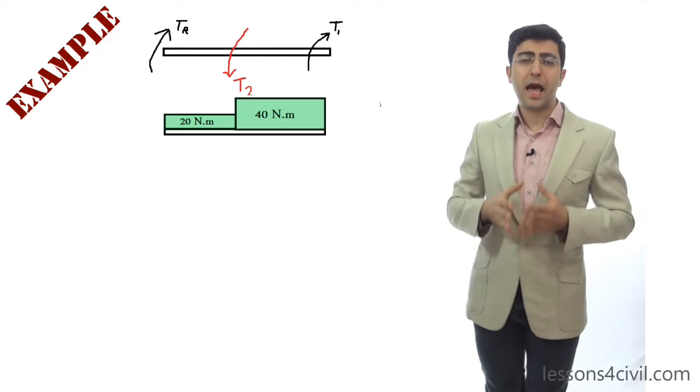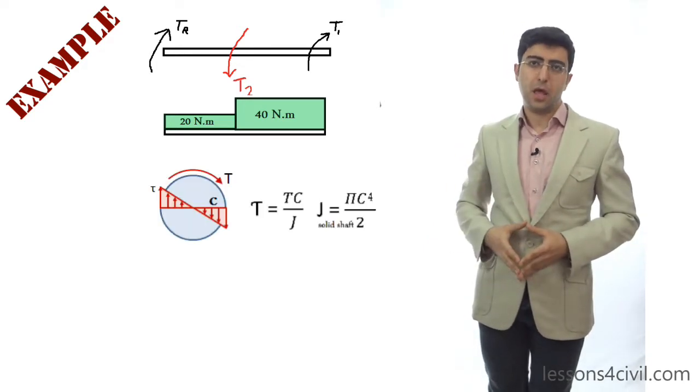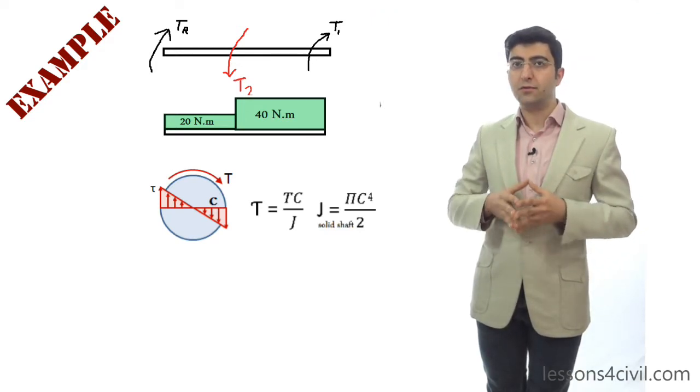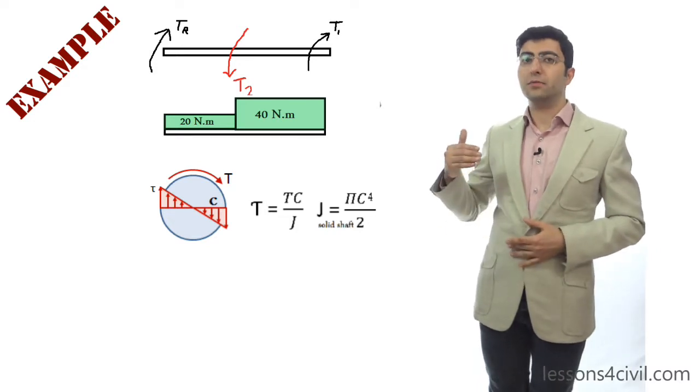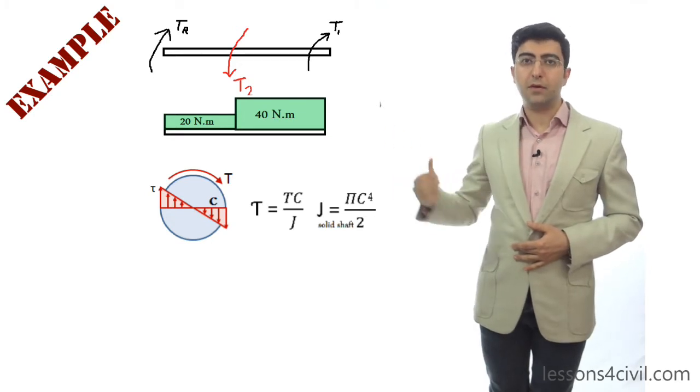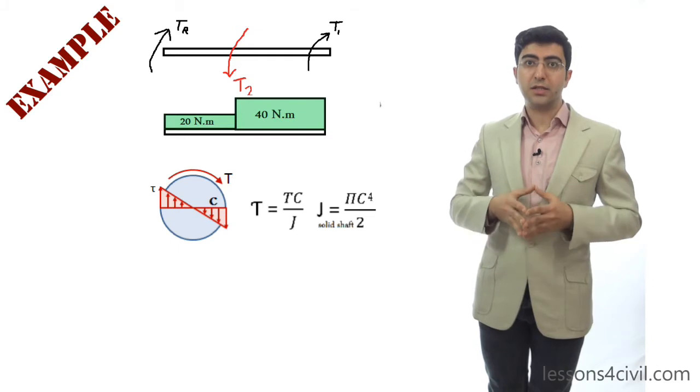So now the question is how it is going to be distributed inside the cross-section. Based on what I said earlier, we have a linear distribution of torsional stress on each radius. It starts from zero at the center, and then it becomes maximum in the outer boundary of the circle.